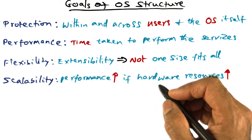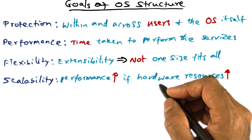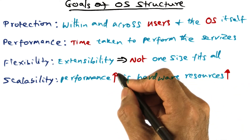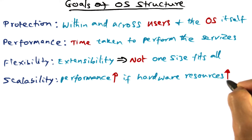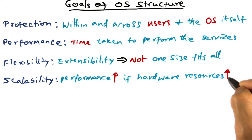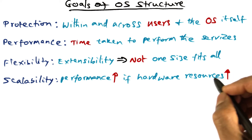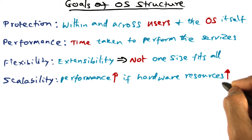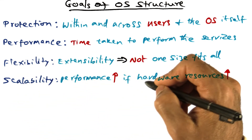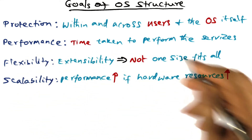Another important goal of structuring an operating system is to ensure that the performance of the operating system goes up as you add more hardware resources to the system. You want to make sure that when you increase the hardware resources, the performance also goes up — and that's what is meant by scalability.